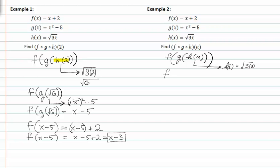So now I'll rewrite my function with g of root three a in for h of a. Now that I have the root three a in my g of x function, I can find out what g of root three a actually is.